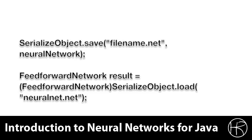Here you see two functions that can be used to save and load neural networks. They both use Java serialization. The top one saves the neural network to the file name specified. You also pass in the neural network. The second one will load the neural network from the file name specified and it will return a feedforward neural network.